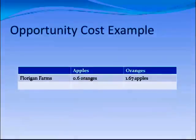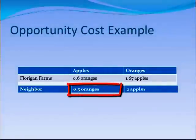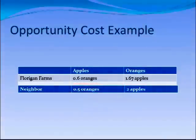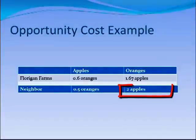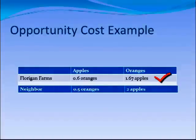Let's look at an example. Back at Florigen Farms, we've already calculated the opportunity costs for apples and oranges. Our neighbor has done these calculations too and finds she only has to give up half an orange to make an apple, whereas we give up 0.6. So she is the low-cost apple producer and will specialize in apples. When her opportunity cost of an apple is one-half, the opportunity cost of an orange is the inverse — two apples. So because of this inverse property, she has the comparative advantage in apples, meaning we must have the comparative advantage in oranges.